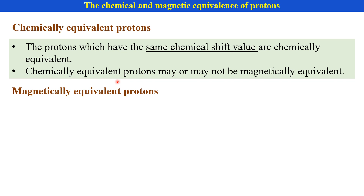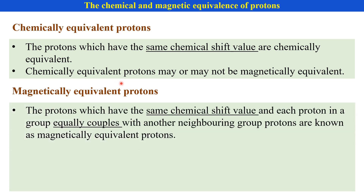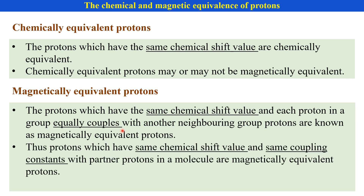Then the question is: what is meant by magnetically equivalent protons? The protons which have the same chemical shift value and each proton in a group equally couples with another neighboring group's protons are known as magnetically equivalent protons.